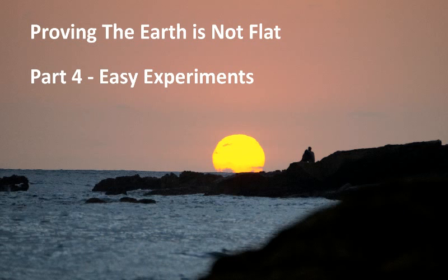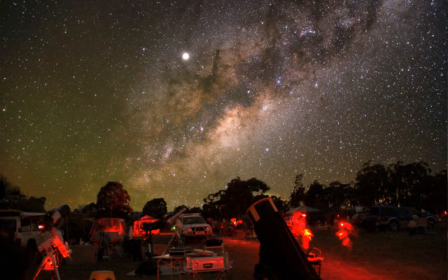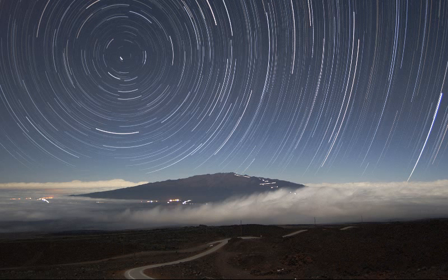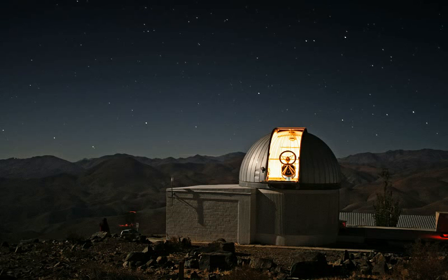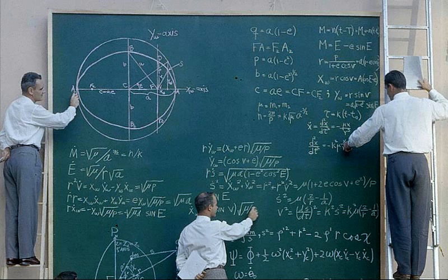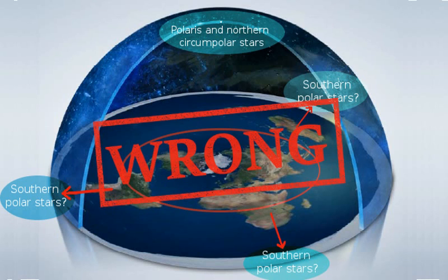This is part four of the series proving the earth is not flat. Since the beginning of this series I said there would be experiments. So finally in this segment I am going to show you two simple experiments you can do to prove to yourself that the earth is a sphere. I picked experiments that are very easy and don't require any expensive equipment. I will show you how to do the experiments and will show you my results and explain what they mean for the heliocentric globe earth model and for the failed flat earth conjecture.